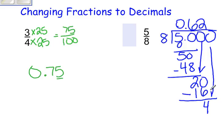Add another 0, bring it down. 8 goes into 40, 5 times. 8 times 5 is 40.